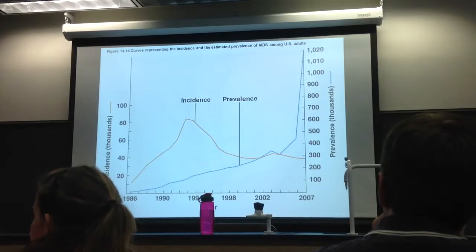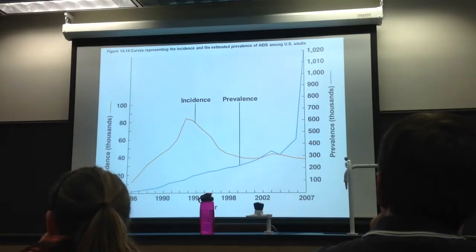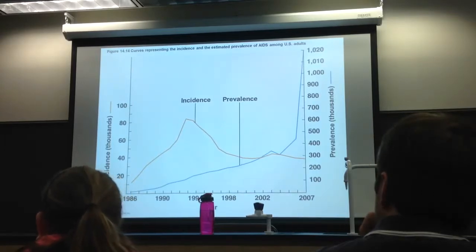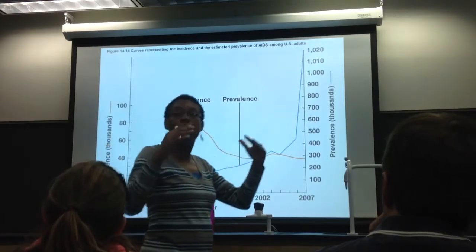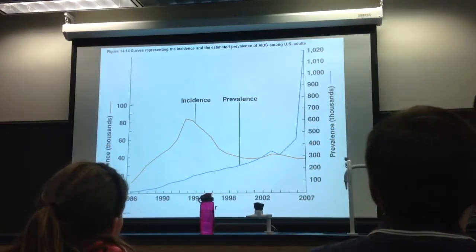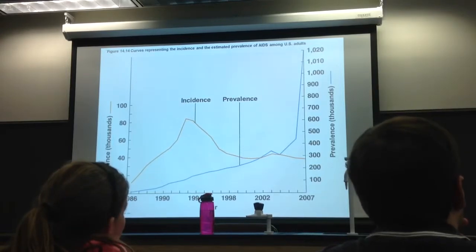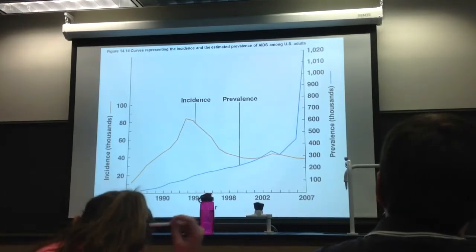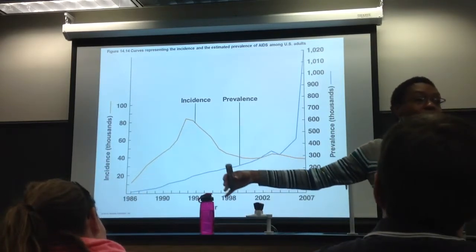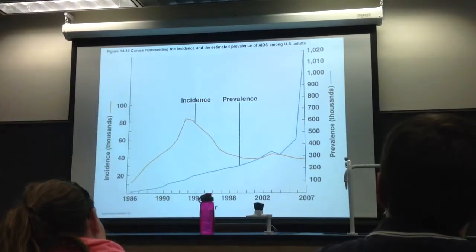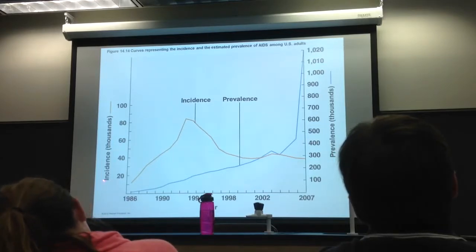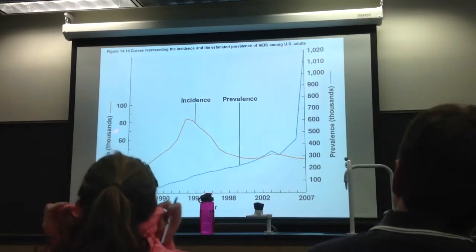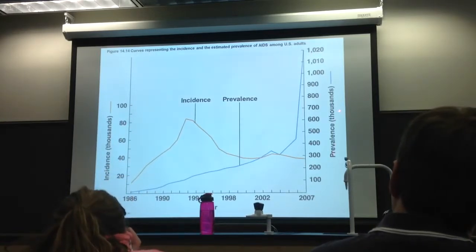Note that the chart has two different scales. Why must incidence always be lower than prevalence? Because incidence only counts the new numbers — the new cases. Prevalence includes all those new numbers plus the older ones. On the y-axis, the prevalence scale starts at 100,000–200,000, which is why you could be misled by the graph.